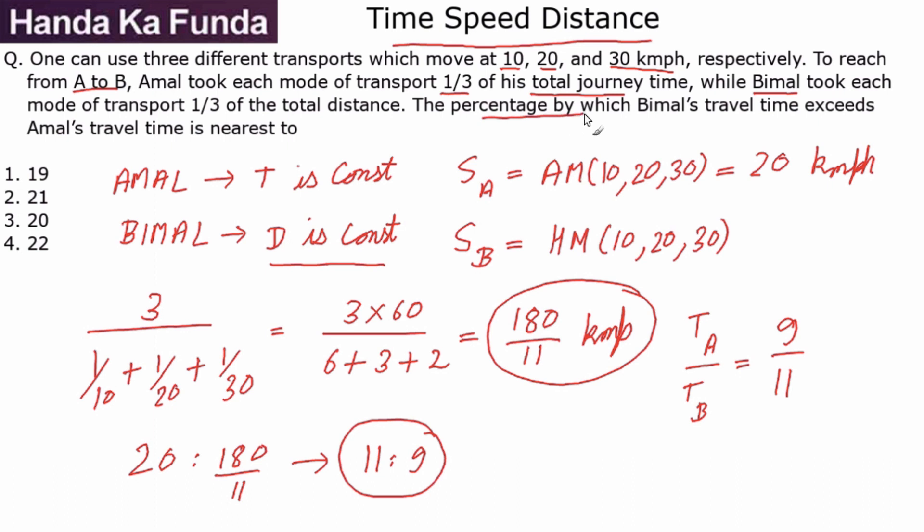Once I have that, what do we need to find out? We need to find out the percentage by which Bimal's travel time exceeds Amal's travel time. So if Amal takes 9 hours and Bimal takes 11 hours, Bimal takes 2 hours extra. In percentage terms, he takes this 2 hours extra over a base of 9 hours, so 2/9 times 100, which is nothing else but 22.22%.